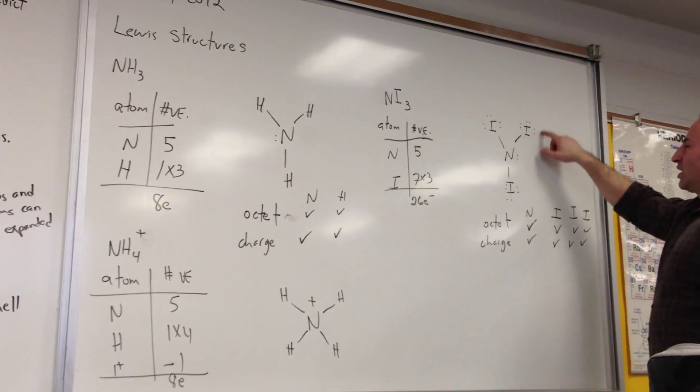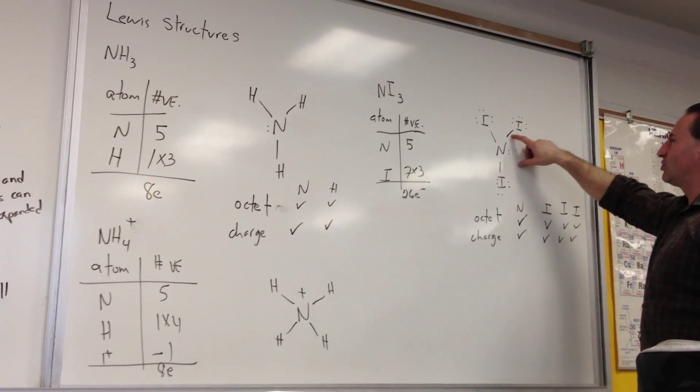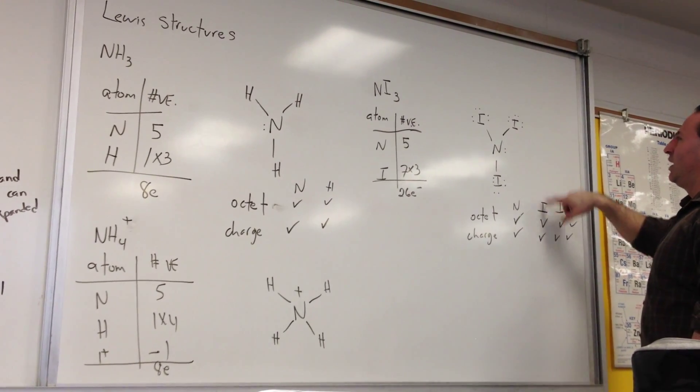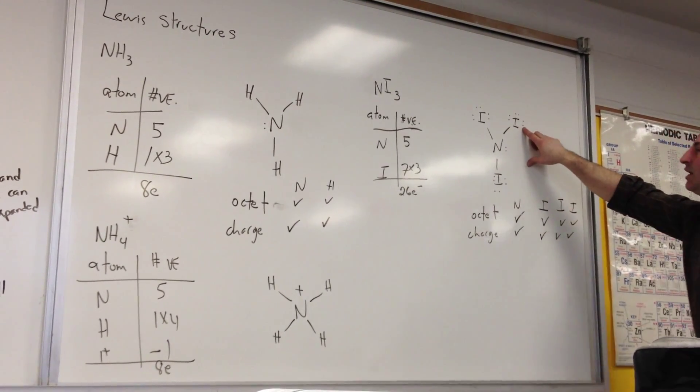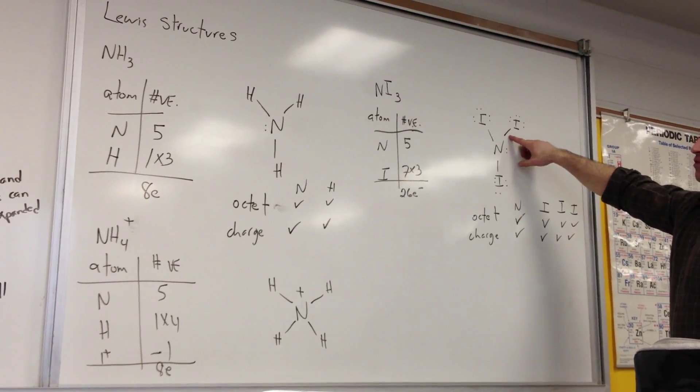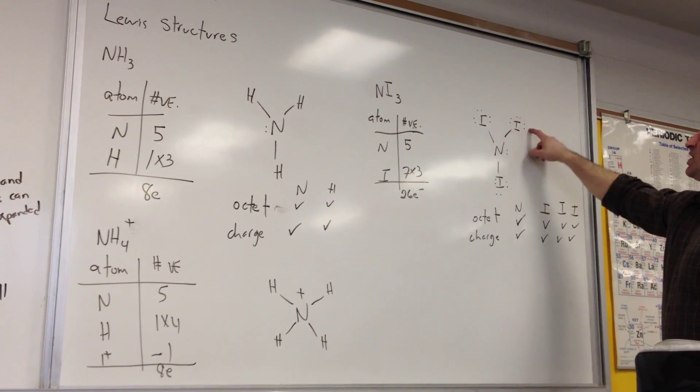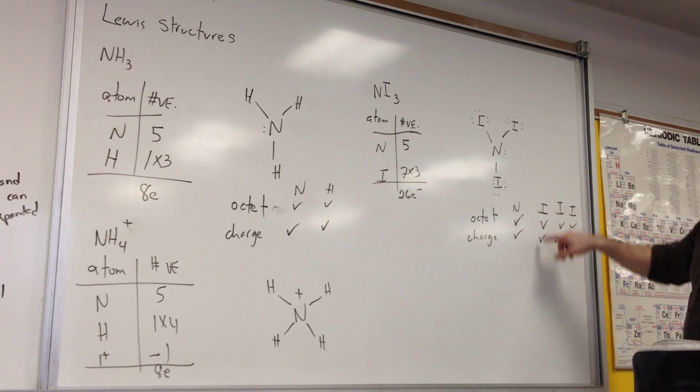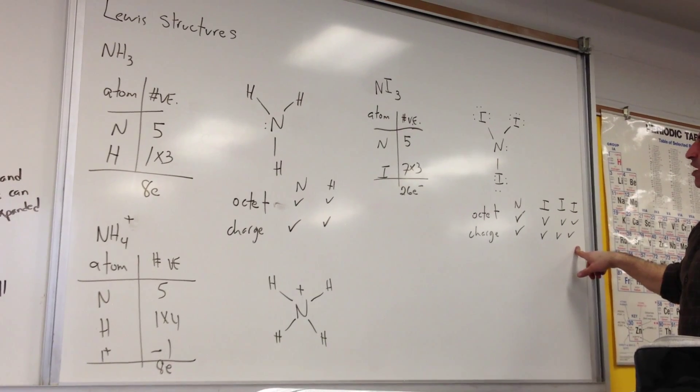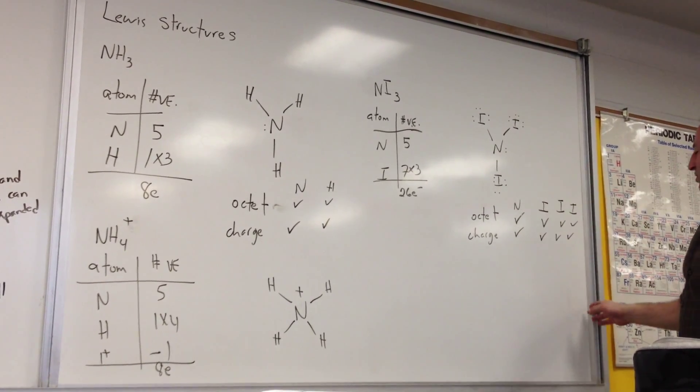Iodine likes to have a fulfilled octet: 2, 4, 6 plus the 1, plus the bond which also accounts for 2. So 2, 4, 6, 8. The octet requirement for iodine is met. And the charge for iodine - iodine likes to have possession of 7 electrons. And as we recall that bonds count for 1 when it comes to charge requirements. So 1 plus the 2, 4, 6. 6 plus 1 is 7. There is no charge on iodine. So all the iodines are similar. They all meet the charge and octet requirement. This would be the valid Lewis structure for nitrogen triiodide.